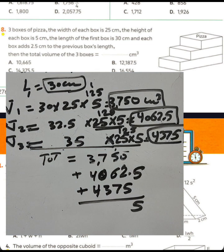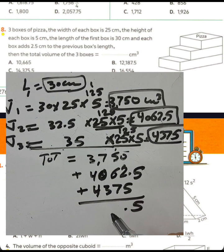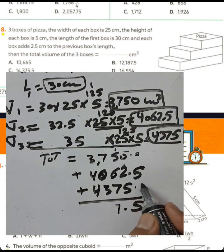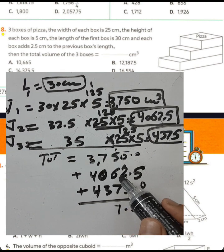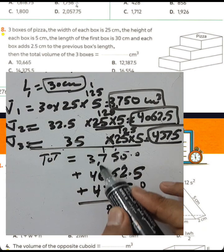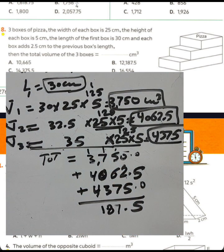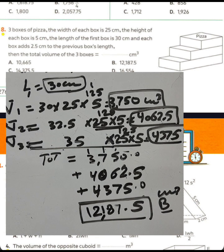Adding the three volumes: 3750 plus 4062.5 plus 4375. Working column by column through the addition, the total volume is 12,187.5 cubic centimeters.